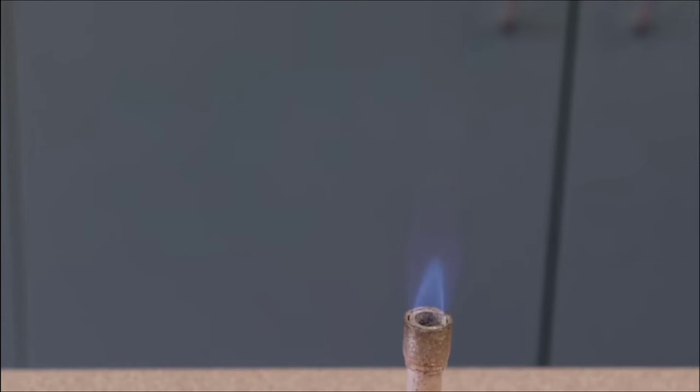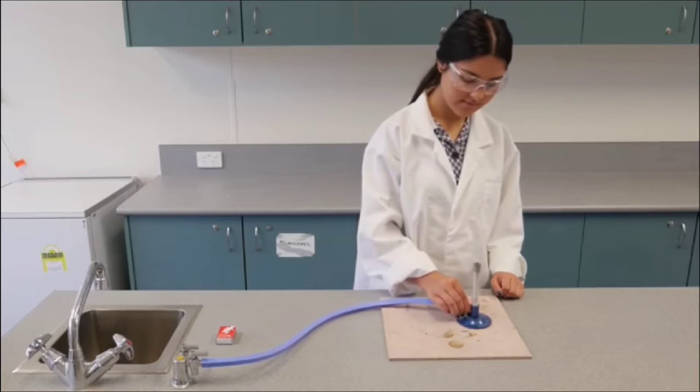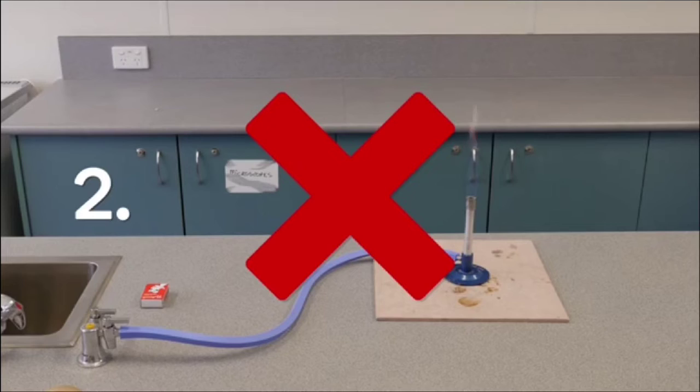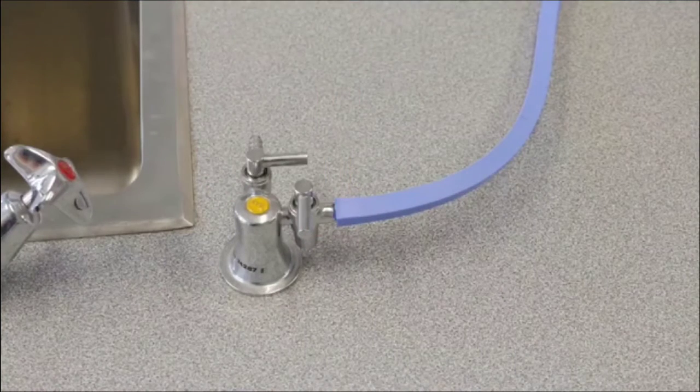There are three more safety rules for using the Bunsen burner while it's lit. If you need to move the burner, hold it by the base. Don't touch it any higher than the collar. Never leave a lit Bunsen burner unattended. And if anything goes wrong, turn off the gas tap immediately.